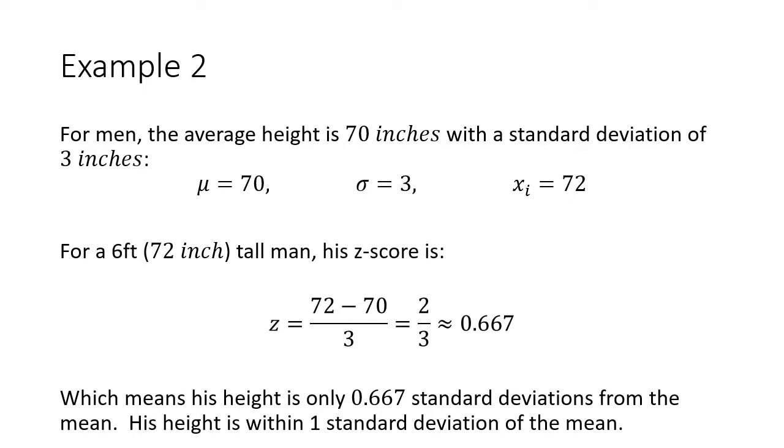I gave you the formula here for the z-score in terms of the population mean and population standard deviation, but we can easily do this for sample means and sample standard deviations as well. Let's actually find the z-scores for a six-foot-tall man, and then we'll do the six-foot-tall woman. For men, the average height is 70 inches tall, 5'10", with a standard deviation of 3 inches. The average is 70, so mu equals 70, standard deviation is 3, sigma equals 3, and we have our man who's six-foot-tall or 72 inches tall.